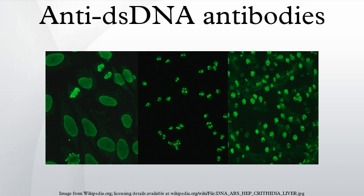Flow cytometry for the detection of ANA uses multiplex polystyrene beads coated with multiple auto-antigens, such as SSA, SSB, SM, RNP, SCL70, JO1, dsDNA, Centromere B and histone. Serum is incubated with the beads, and in the presence of anti-dsDNA antibodies or any other ANA, the antibodies will bind and fluorescent-labeled secondary antibodies will be used for detection. The beads are run through a flow cell which uses a laser to detect fluorescence.